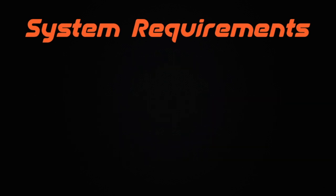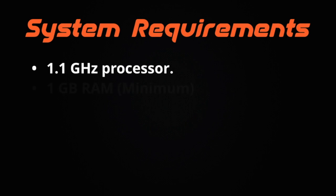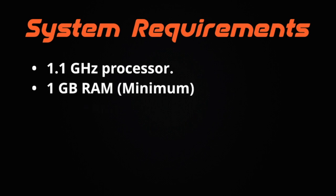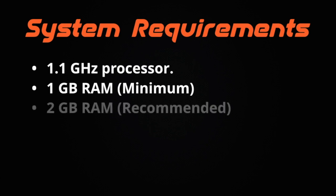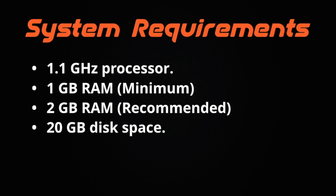We have different requirements for each operating system version. If you want to run version 6 of any of these, check out our documentation for all the details. Here's what you need for version 7: a 1.1 gigahertz processor, a minimum of 1 gigabyte of RAM (but we recommend at least 2 gigabytes), plus at least 20 gigabytes of disk space. Depending on the exact server configuration you're using, you might have to meet a few other requirements.